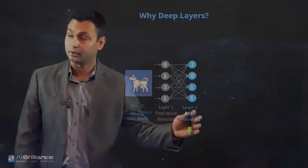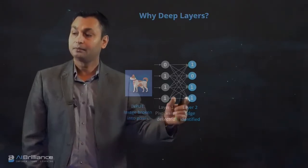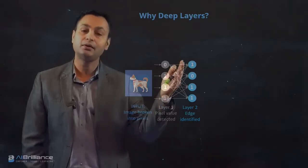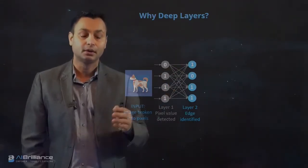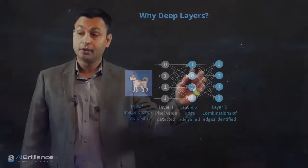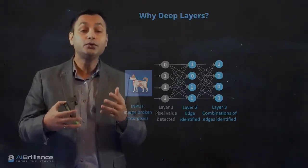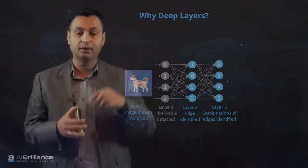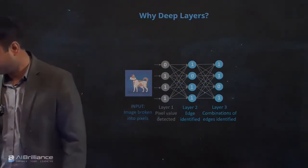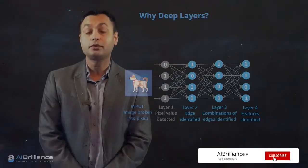As you progress through each layer, at layer one you are essentially inferring information at the pixel level. Then at layer two, you start doing something like trying to understand what the edges are in the overall image. When you go to layer three, you are trying to understand or infer about the image using combinations of edges, rather than a single edge.